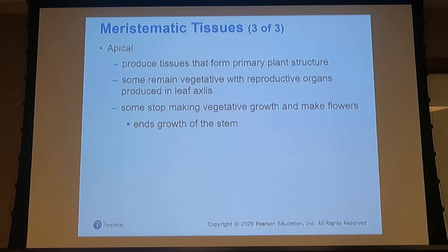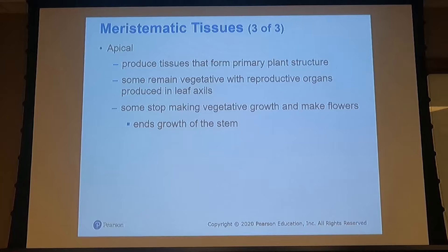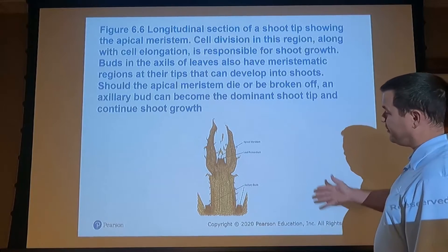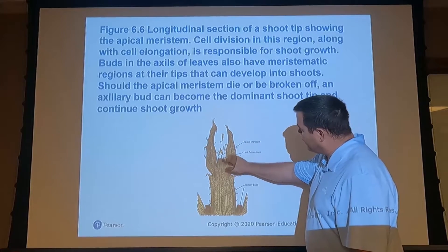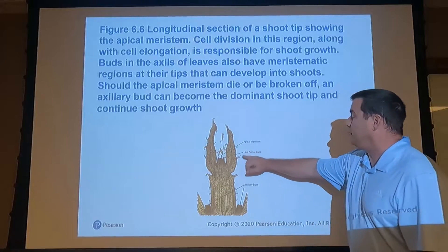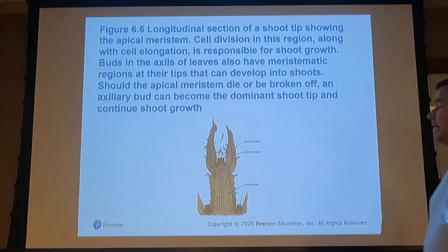The apical meristem can remain vegetative with reproductive organs and leaf axils, but at some point those meristems will begin making the change from vegetative into reproductive growth stages. A longitudinal section of a root tip shows the apical meristem beginning to differentiate, with axillary buds at the base and leaf primordia at the tips of the apical meristem.